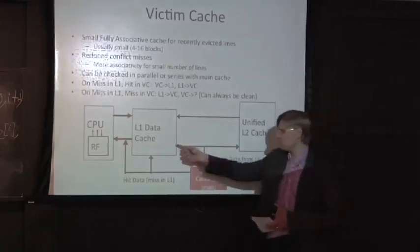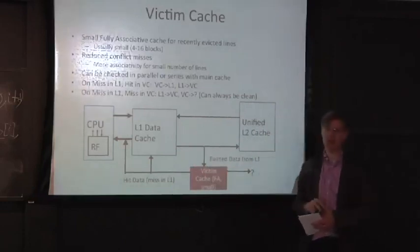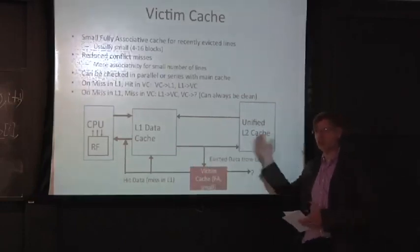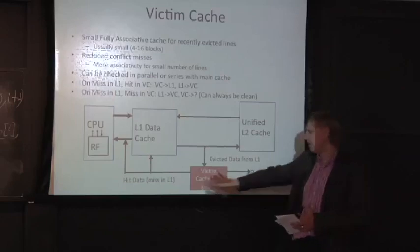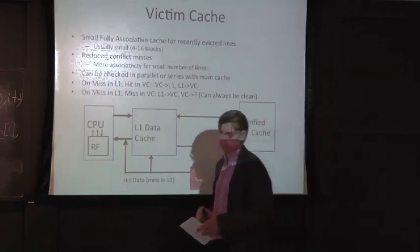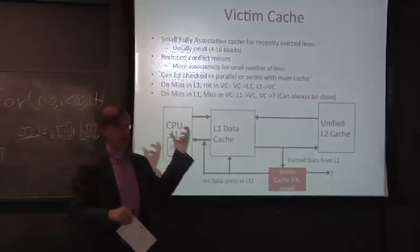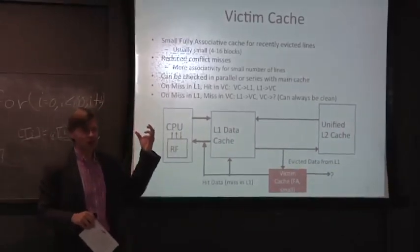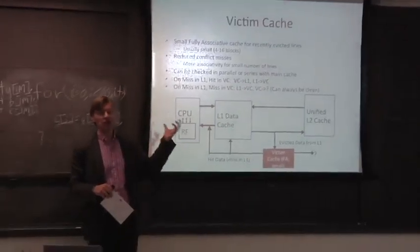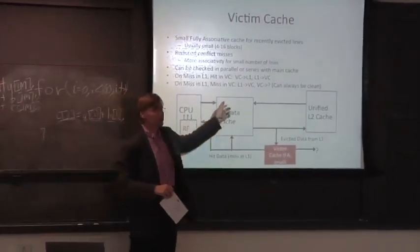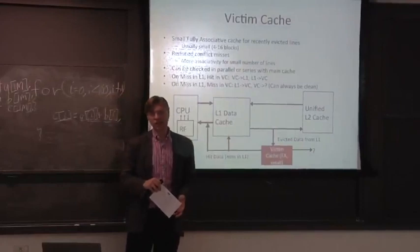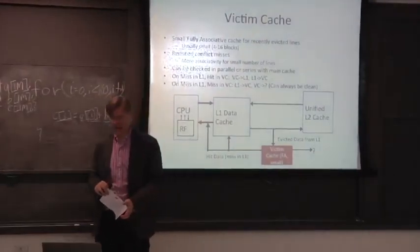Thankfully, usually if you're doing the evict, you might have enough extra bandwidth in your L2 here to actually just do the write into the L2 at that point and leave the victim cache completely clean. So to recap, the basic idea here is you can add a couple extra ways, if you will, or a little bit of extra associativity for a very limited set of the indexes in your cache here by adding this victim cache.